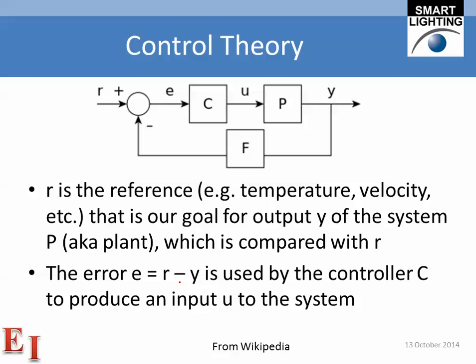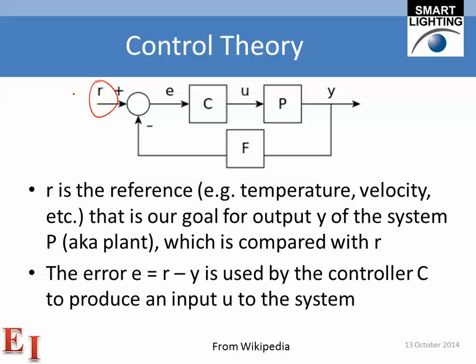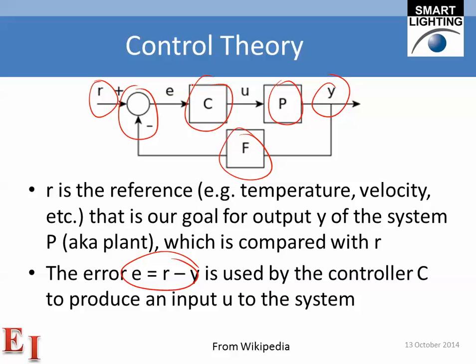A little background on control theory, just to put things in context. R is a reference — for example, that could be the temperature we would like an HVAC system to maintain, whether cooled or heated to a particular temperature. The system is labeled with a P for plant, which is the usual term used in controls. We take the temperature that we actually measure, use feedback to compare it and produce an error term, which is the difference between the specified temperature and the actual temperature. Then the controller labeled C produces an output U to the system — a control voltage that tells the system to turn on or off to get the temperature to the desired level.